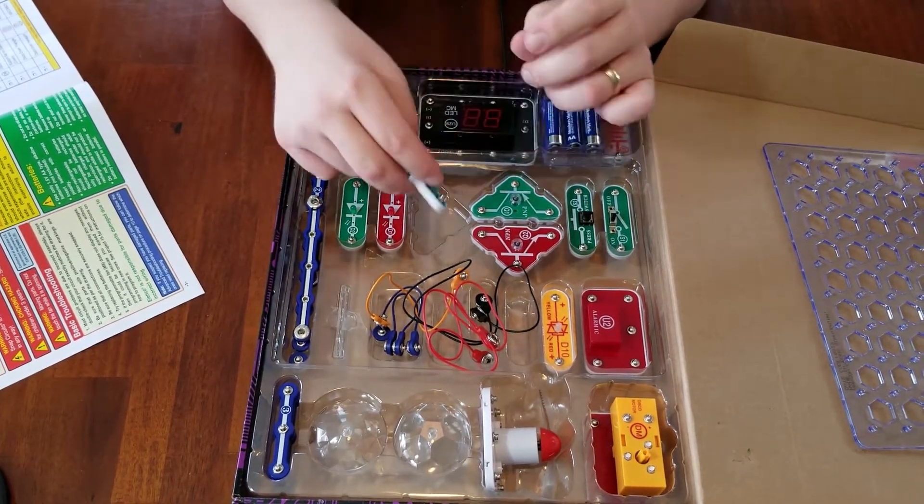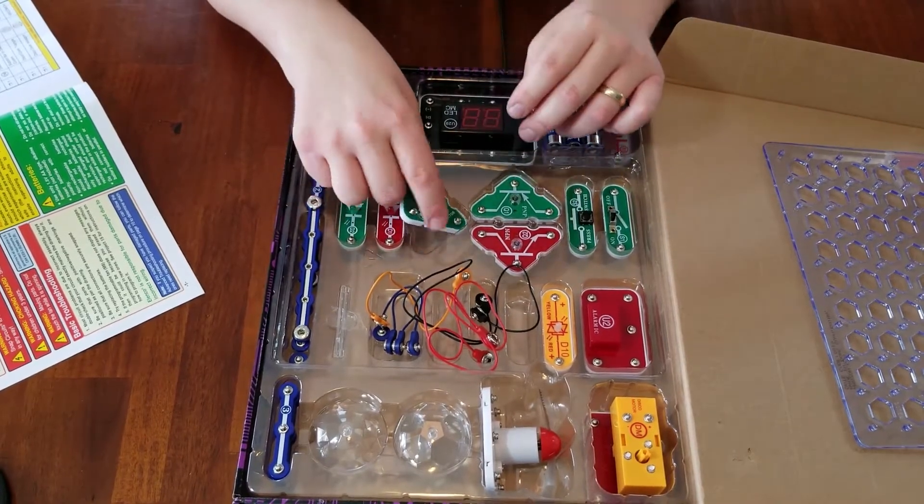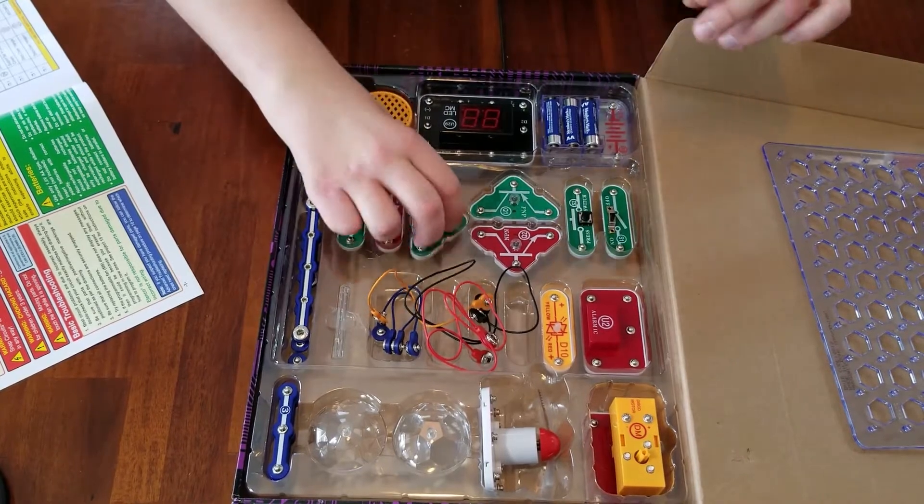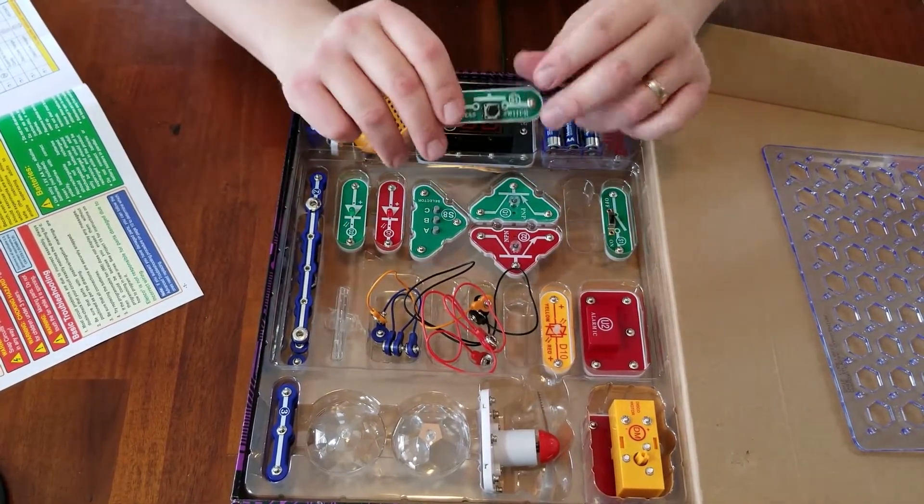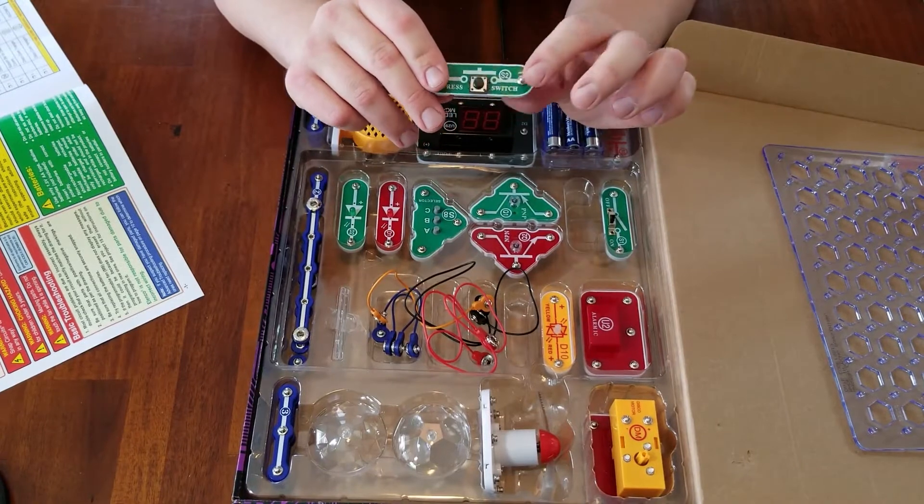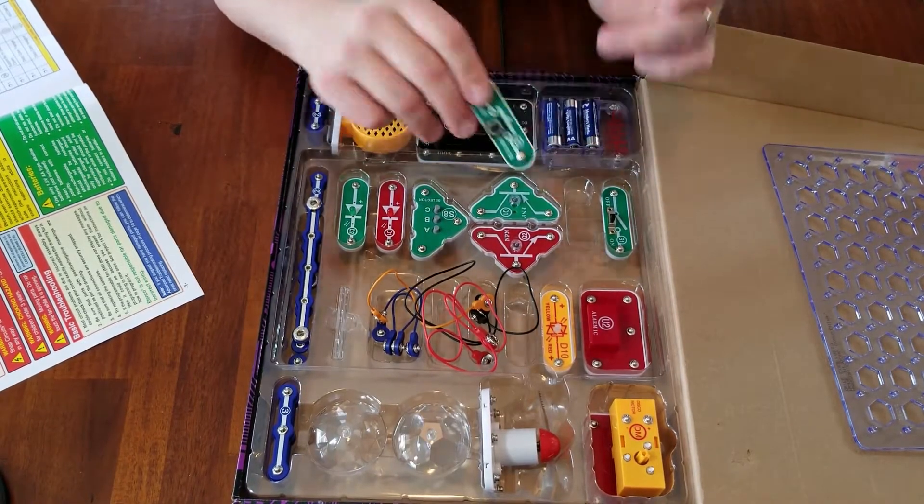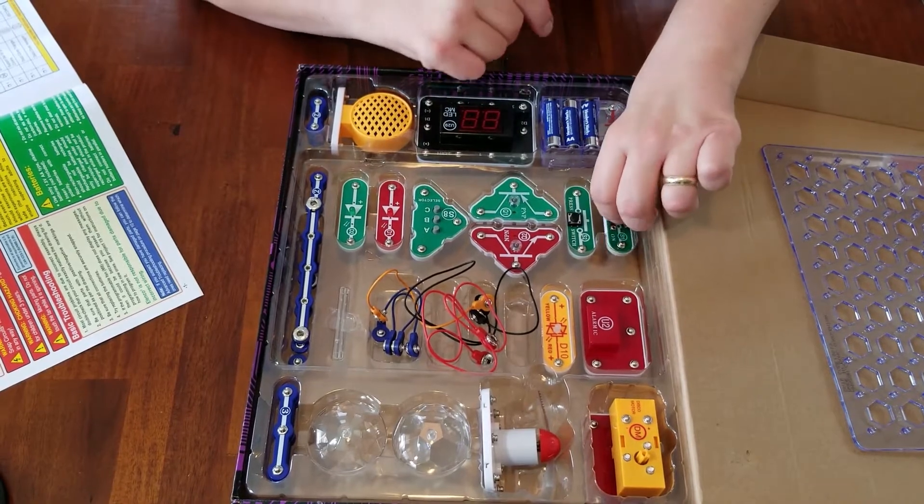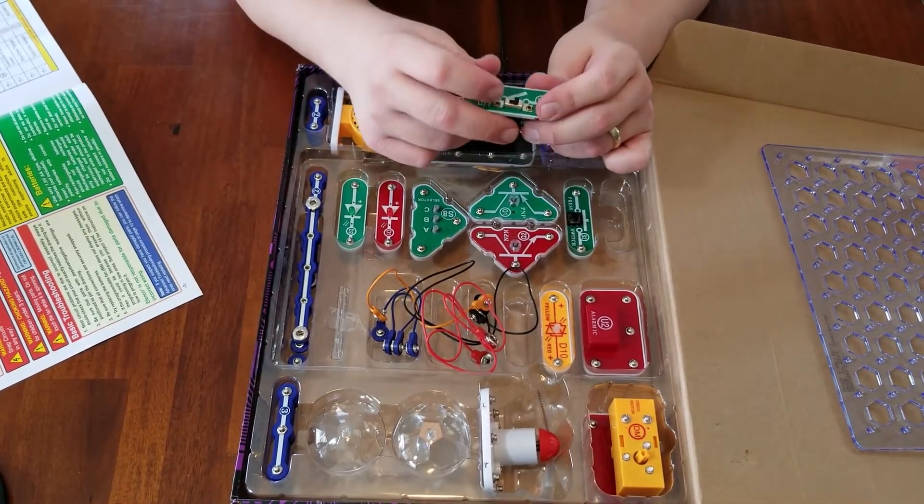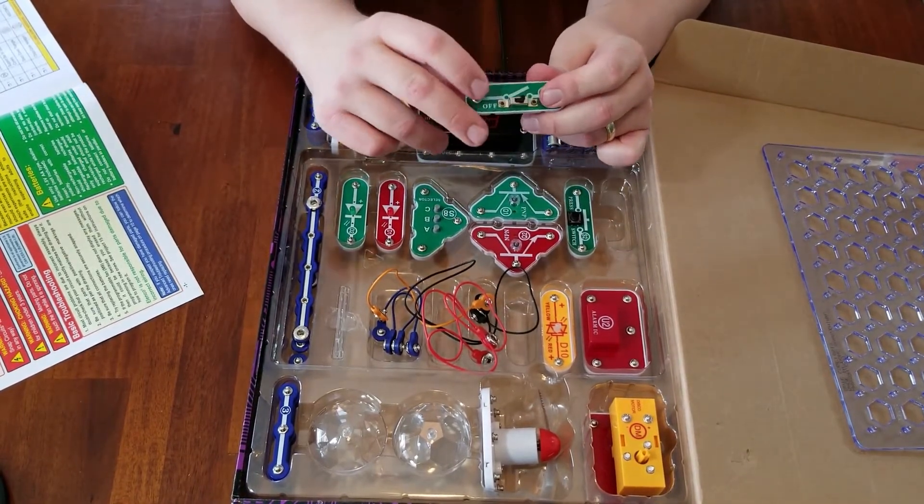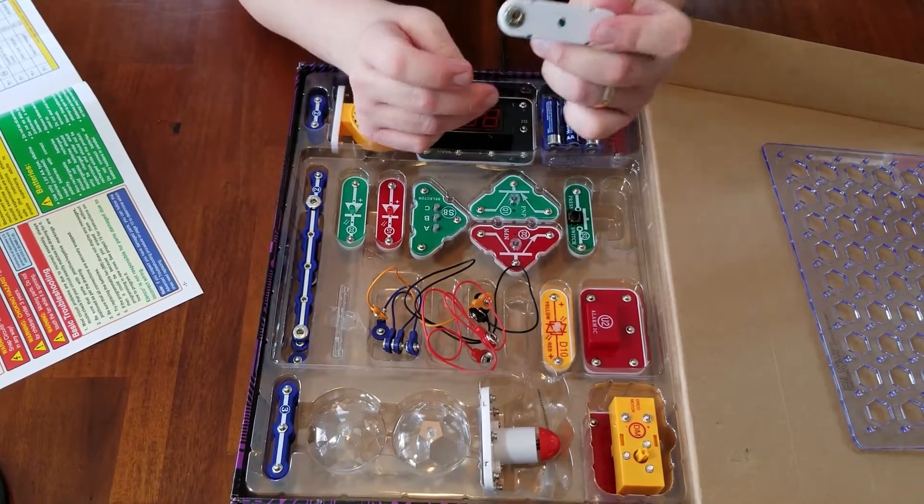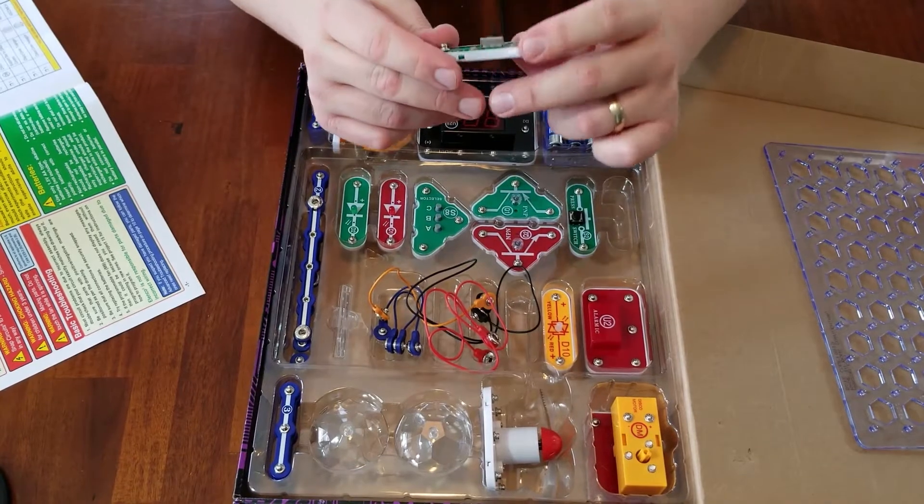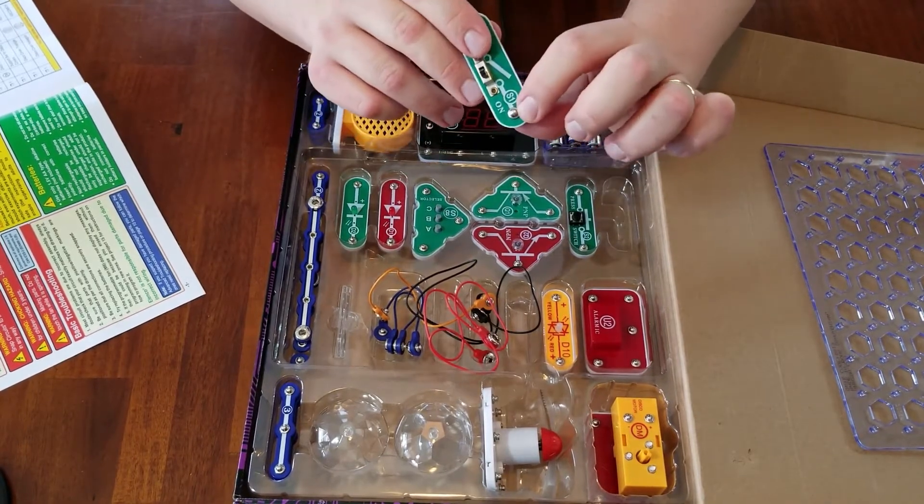So the next thing is a press switch. The press switch right here. That looks to be replaceable as well if anything ever happened to that. And right here is a slide switch. And again, it has that same backing. You can take a look at the snap, the way it snaps. Snaps right on there.